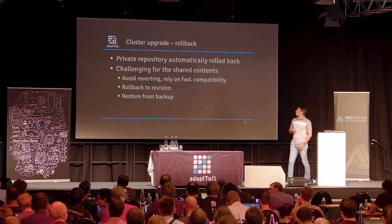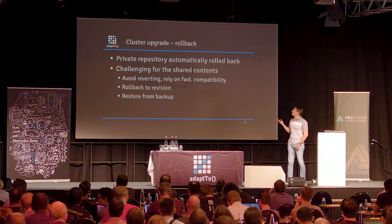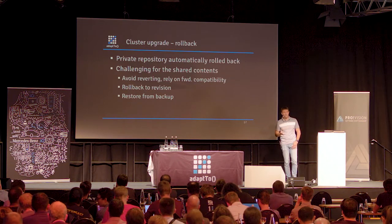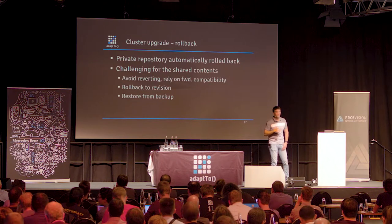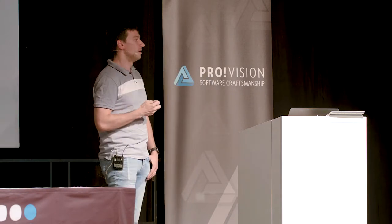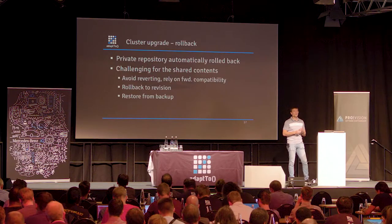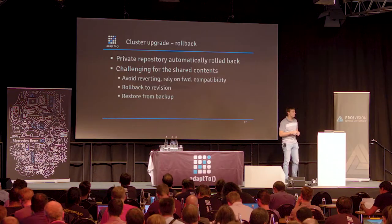Now the rollback — this is also a bit of a problem. Since you're using Docker, the private repositories are automatically rolled back if you install another version. So you install version two, you see it's breaking, you just drop in version one and you have the older libs and apps — no problem whatsoever. But what happens to the shared repository? Assuming that some time has passed since the cluster was upgraded, you may end up with some content that the older version doesn't know how to process. That's why forward compatibility would be nice here.